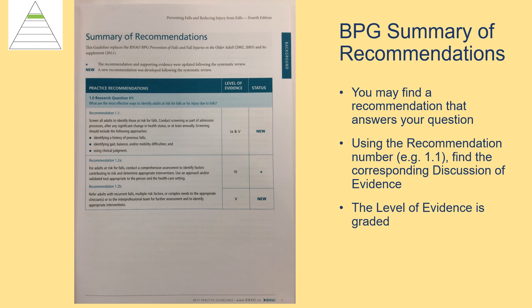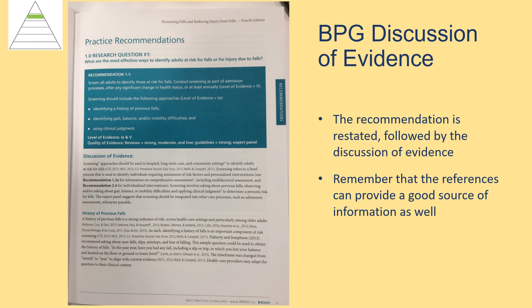Near the front of the book, you will find a summary of recommendations, which gives short recommendations that may answer your question. Each recommendation is given a number, and you will use this number to find the corresponding discussion of evidence. Each recommendation is also assigned a level of evidence — to understand the levels, look for the legend either before or after the summary of recommendations. We move further back in the book to the Practice Recommendations section and look for the relevant recommendation number. The recommendation is restated, the level of evidence is indicated, and then there is a discussion of evidence. Within the discussion of evidence, there will be citations for the sources that provided the evidence to develop the recommendation. Remember that these sources may also be helpful to you and give you more in-depth information as you conduct your research.